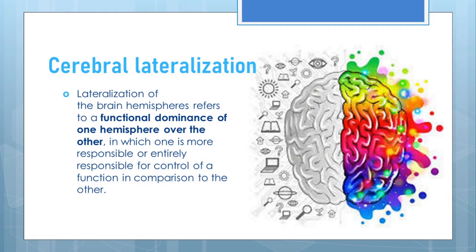When considering a particular function, we can see that one cerebral hemisphere is functionally dominant over the other. This is because one hemisphere is more responsible or entirely responsible for the control of a function in comparison to the other. This doesn't mean that the other hemisphere is non-functional or less functional — it is assigned with other functions. Cerebral lateralization only means that when considering a particular function, one hemisphere is dominant over the other.